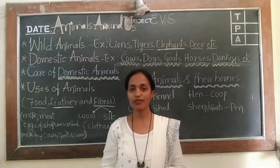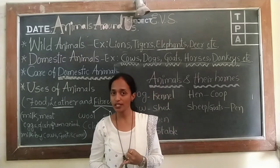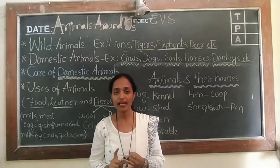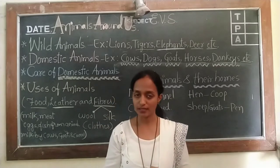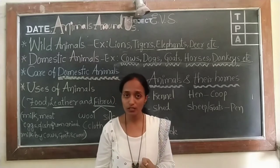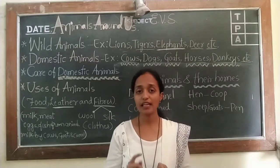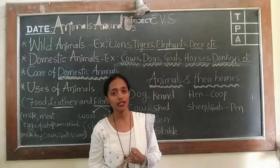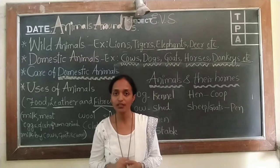There are different kinds of animals around us. Some are small in size, some are big in size, and some animals are of medium size. Some animals live in water, some animals live on land, and few animals live both in water and on land.